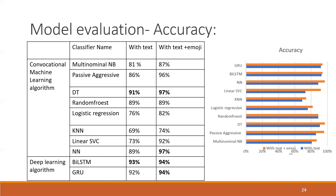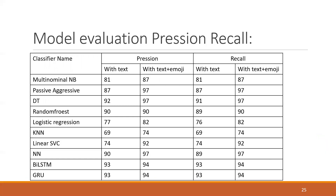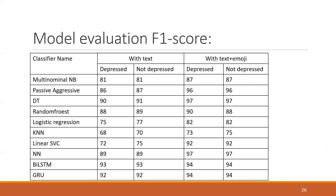The results show that text plus emoji gives better results than text alone, confirming that emojis can express more than text. Decision Tree gives the best result at 97% accuracy with text plus emoji, compared to 91% with text only. Bidirectional LSTM achieves 93% accuracy with text and 94% with text plus emoji. In terms of precision, recall, and F1 score, Decision Tree, Bidirectional LSTM, and GRU all give strong results.